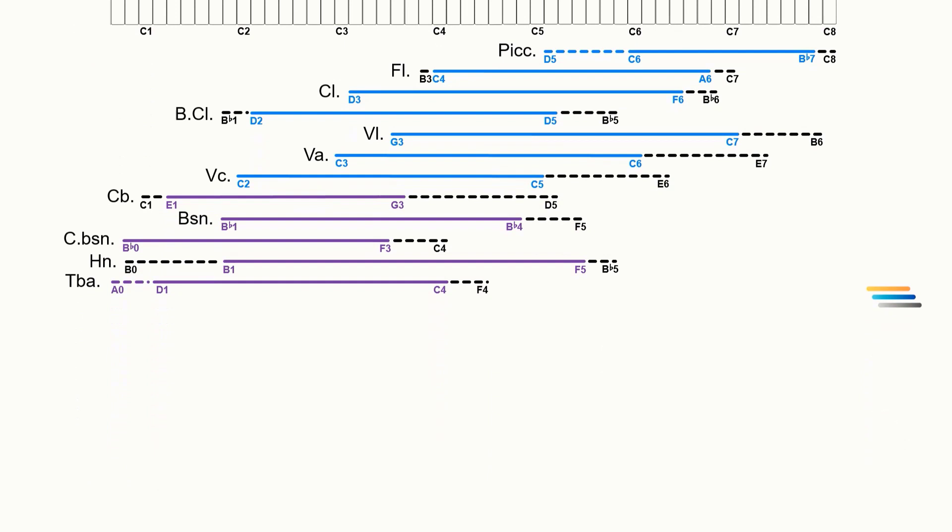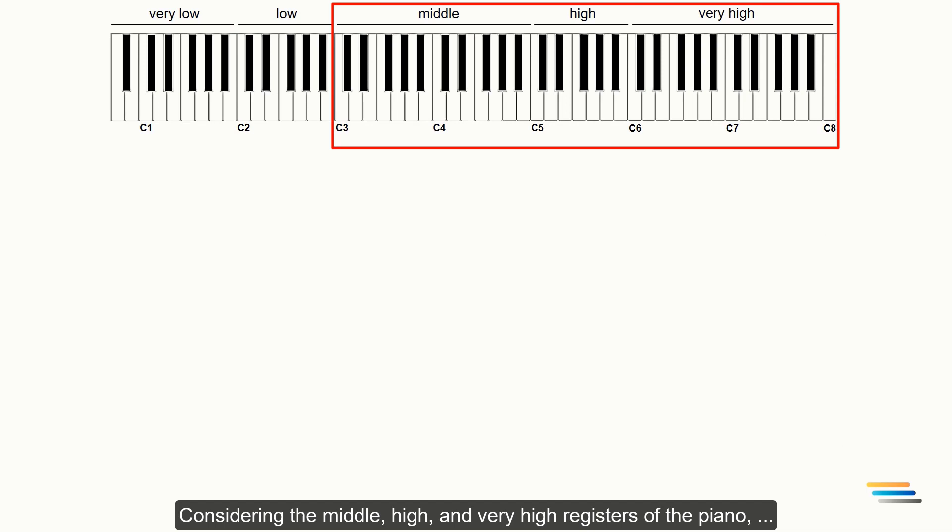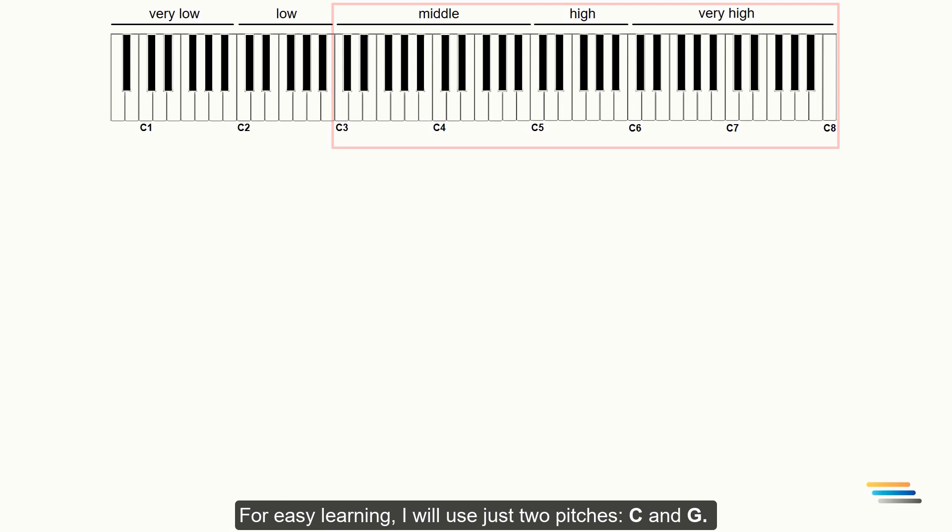Now let's look at the best registers for unison and octave doubling. Considering the middle, high and very high registers of the piano, I'm going to make the first unison and octave doubling chart for the orchestral instruments. For easy learning, I will use just two pitches, C and G.